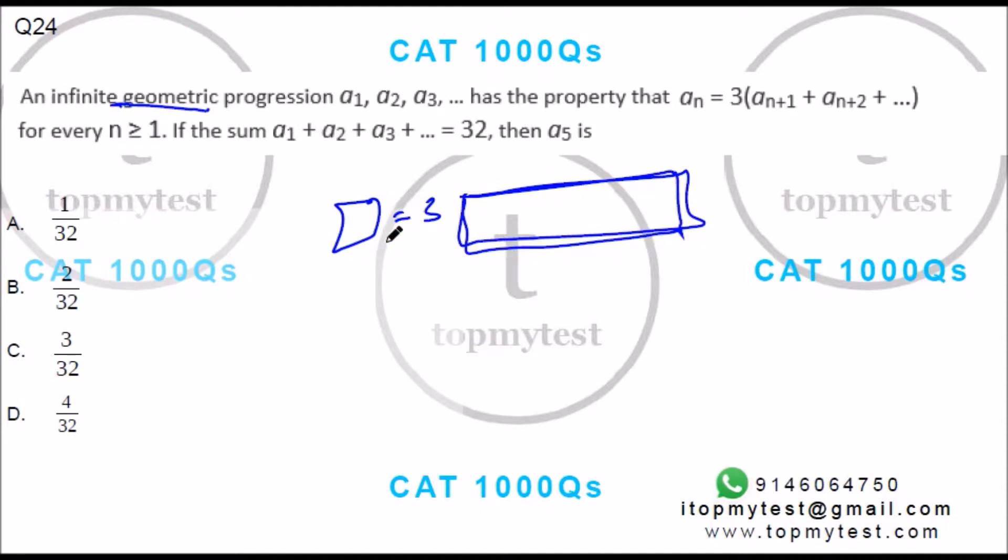Or any term is three times the sum of the rest of the terms which follow it. That is what the progression says. Let's see what we get out of this.